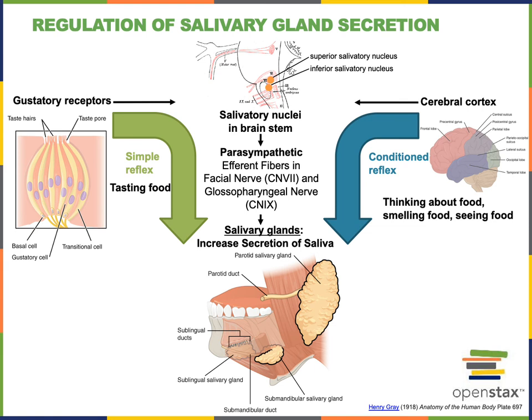The salivary glands are also regulated by conditioned reflexes. The processing of information in the cerebral cortex related to food — just thinking about food, smelling food, or seeing food — is relayed down to the brain stem where the salivatory nuclei become activated and send motor commands through the parasympathetic efferent fibers of the facial and glossopharyngeal nerves, leading to an increased volume of saliva production.